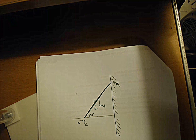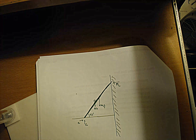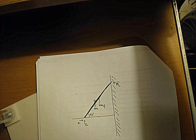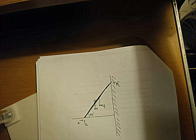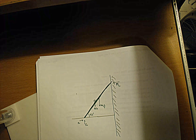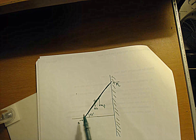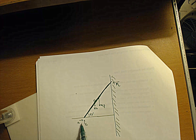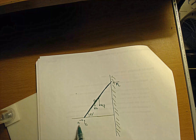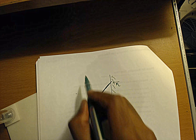This is question two from the set of questions you sent me. A uniform ladder 15 feet long is leaning against a frictionless wall at an angle of 53 degrees above the horizontal. The weight of the ladder is 30 pounds. A 75-pound boy climbed six feet up the ladder. What is the magnitude of the frictional force exerted on the ladder by the floor?